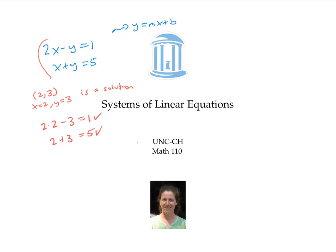However, the ordered pair (1, 4) — that is x equals one, y equals four — is not a solution to the system. Even though this x and y value work in the second equation, since one plus four does equal five, it doesn't work in the first equation, because two times one minus four is not equal to one.